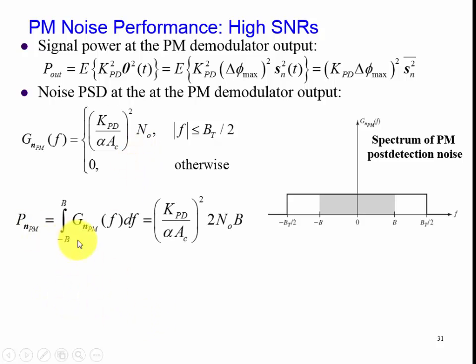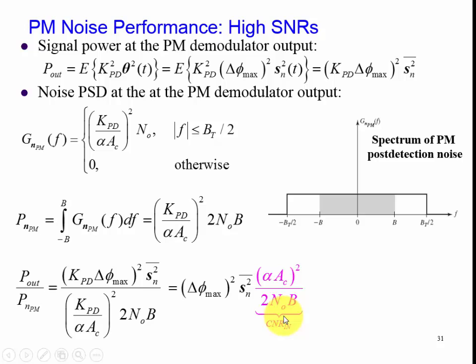We integrated from minus B to B to get this expression. And we figured out that when we take the ratio of P out over P and P, we have this expression. Lots of things cancel out. And now we're left at carrier to N multiplied by SN squared multiplied by delta F max squared.